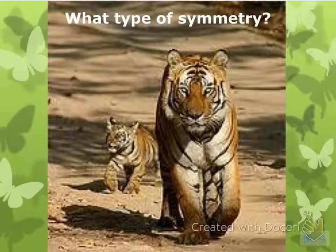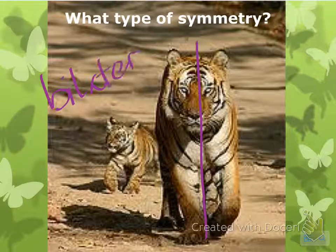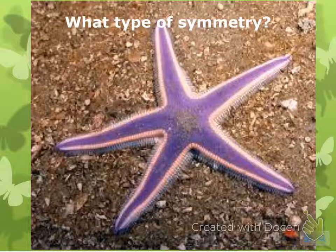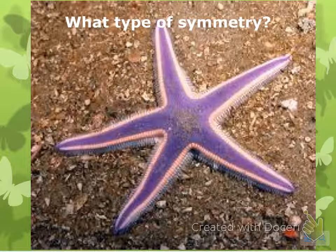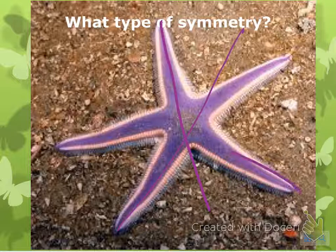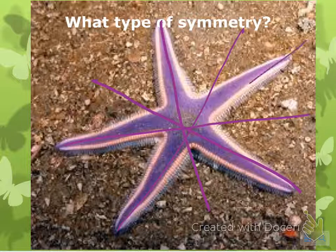This next one is bilateral — cut right down the middle. And this last one could be a trick: at first you might think bilateral, but you could also cut it this way, this way, this way, or that way. So this is radial.